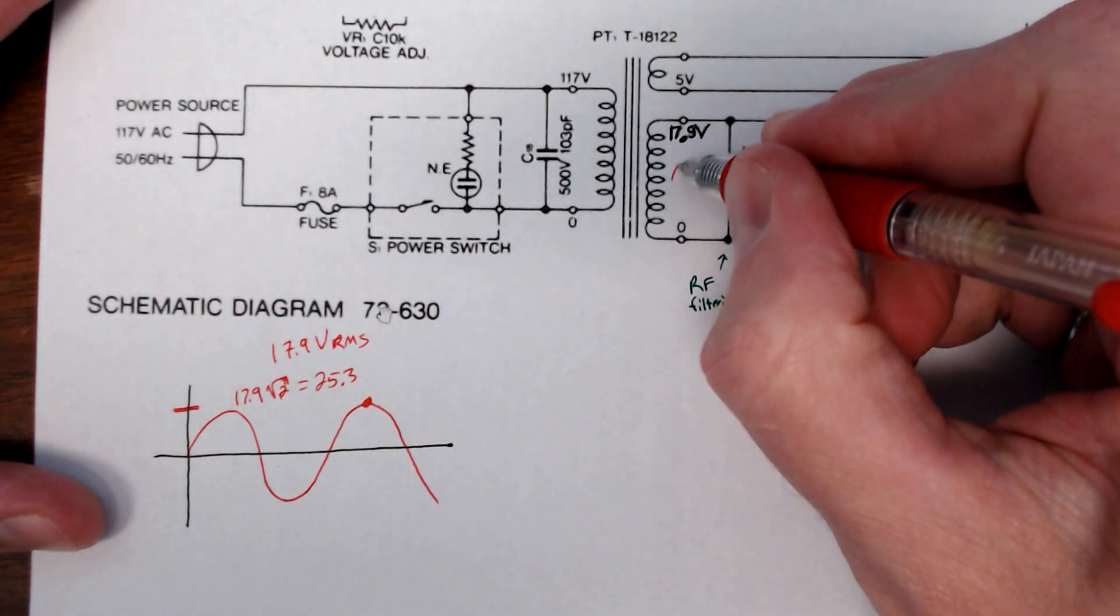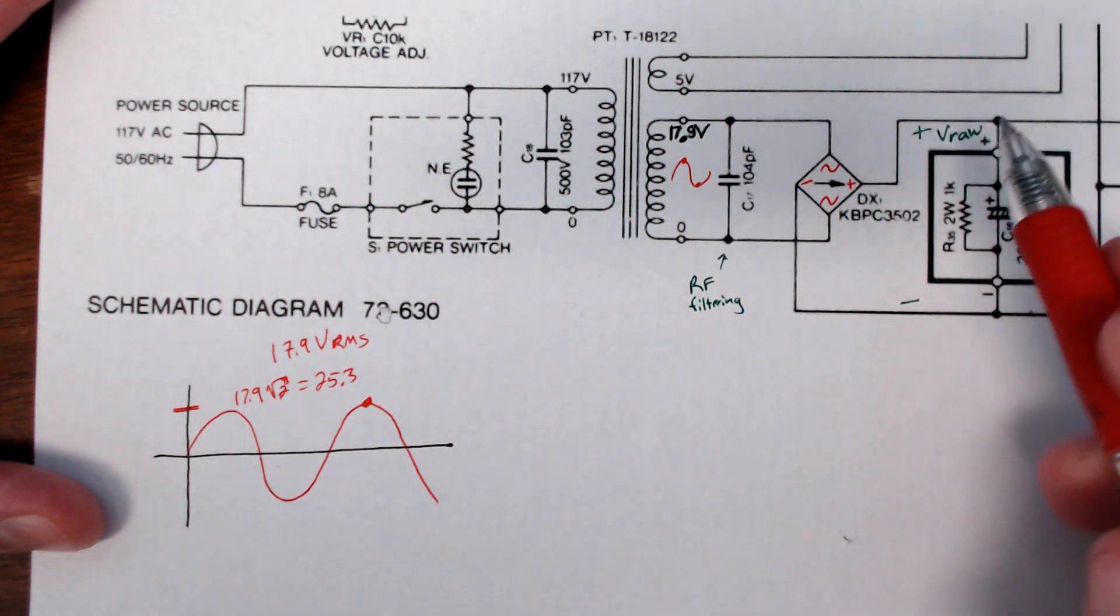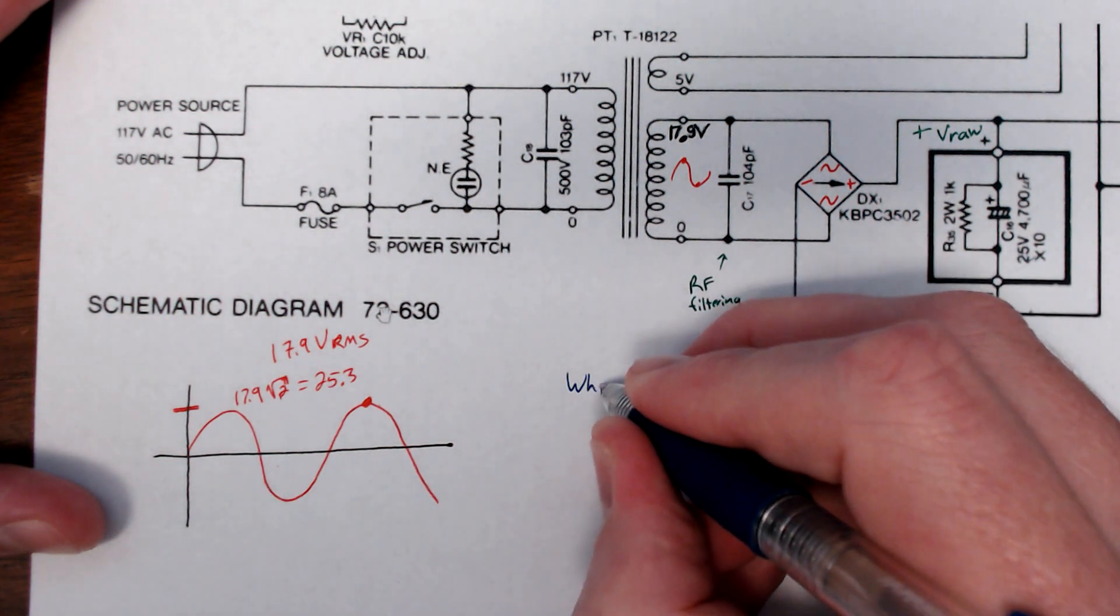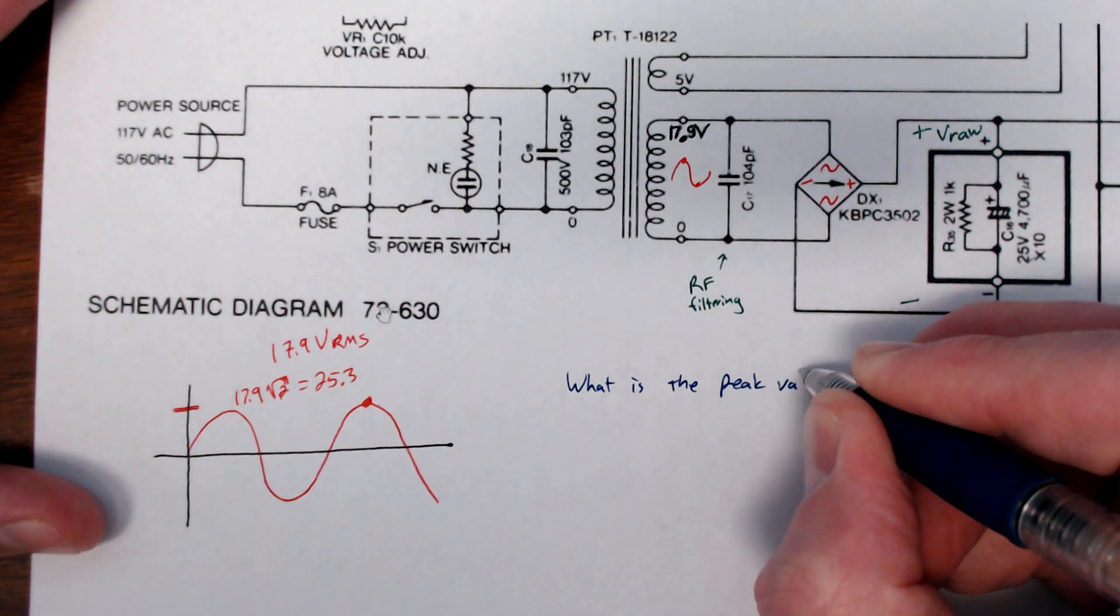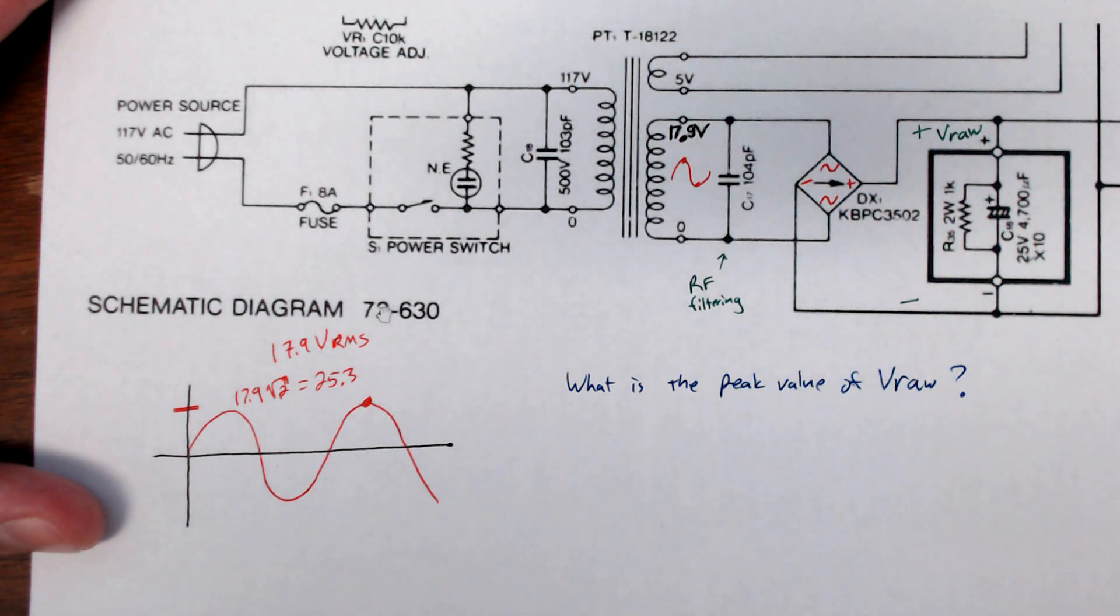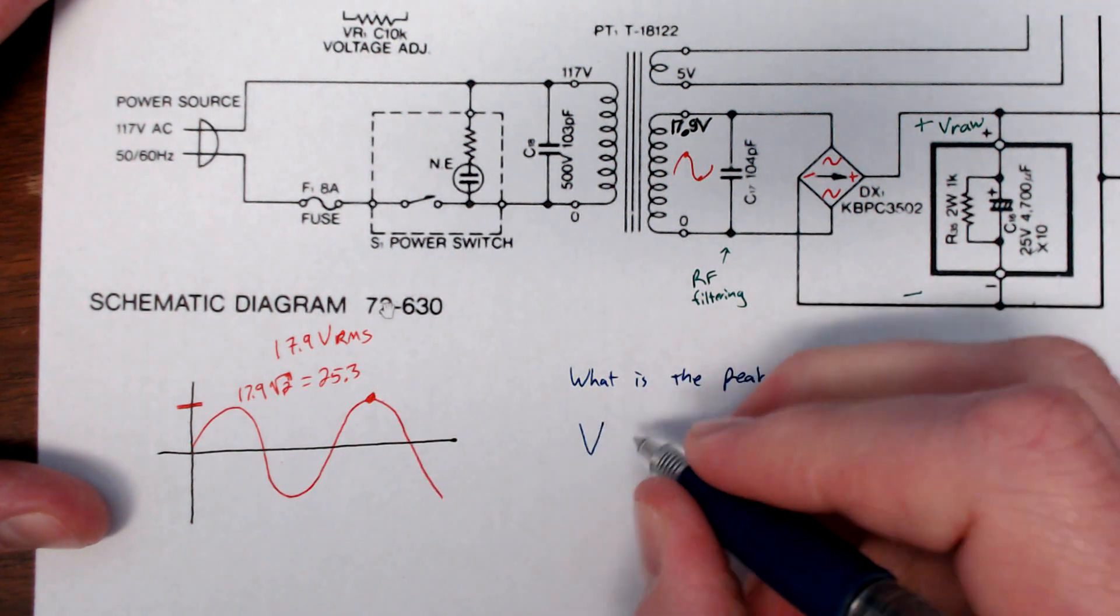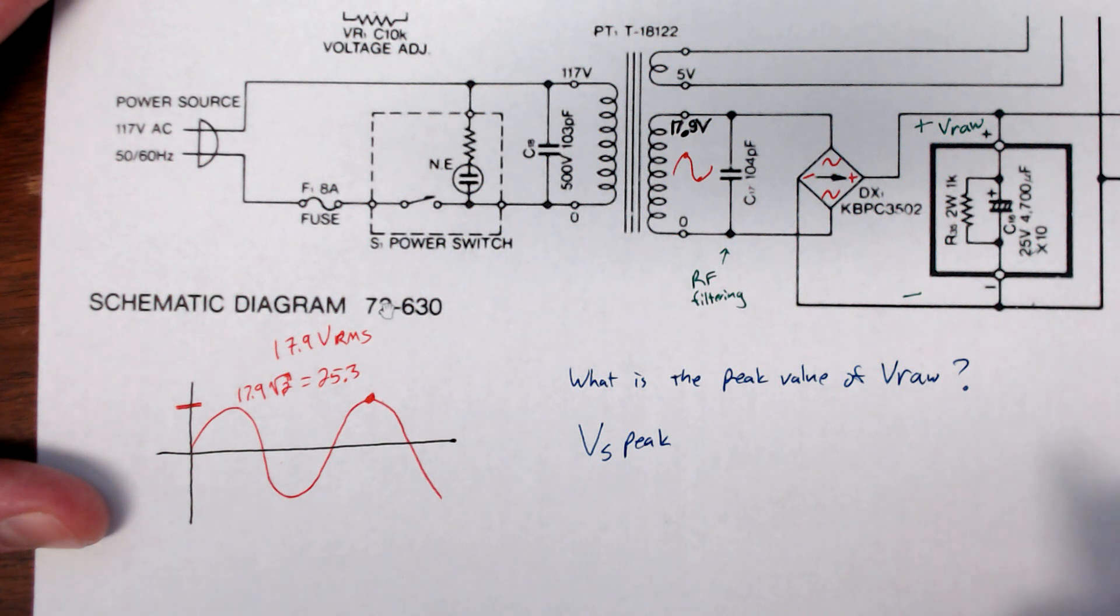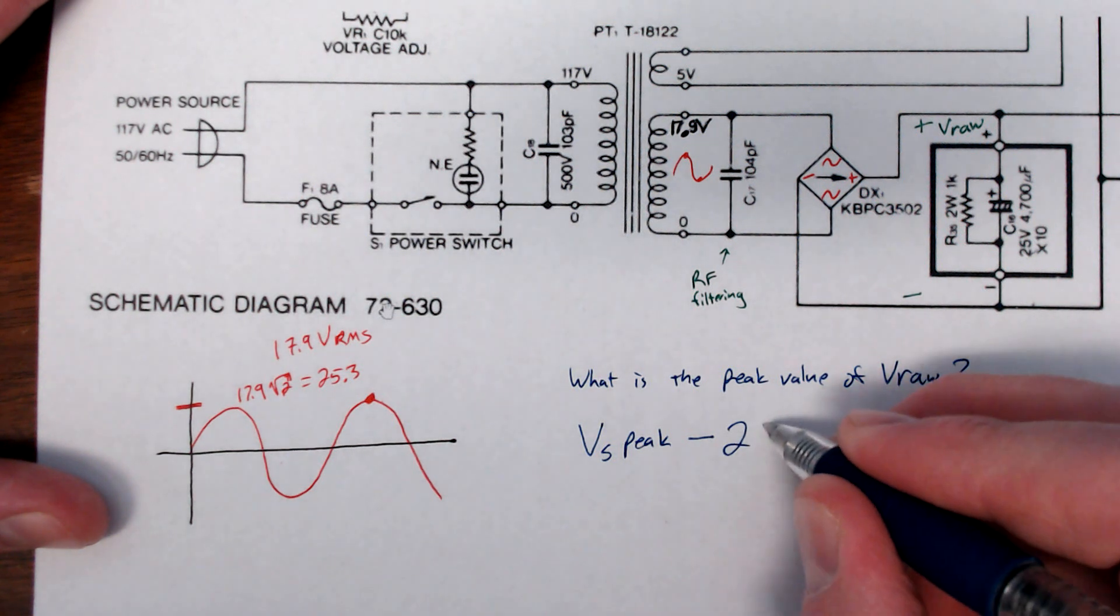Remember that's over here on this side. We go through a bridge rectifier. What is the peak value? I'll ask this in a question. Peak value of V raw. Well, it's going to be the peak value, this one. So V secondary peak. Remember, this is not peak to peak, it's just peak.